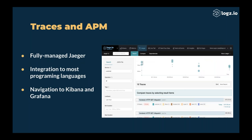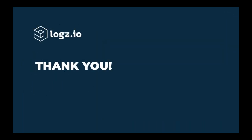On the traces and APM front, this will be a fully managed Jaeger solution. Jaeger is the leading open-source traces and APM tool, integrated with most programming languages, and we're going to support all of them, along with the ability to navigate from Kibana and Grafana to Jaeger while keeping the same context to improve troubleshooting efficiency. We're also adding a few more AI components — there are some limits to what I can share right now, but these are coming. With that, I'll open it up for Q&A.